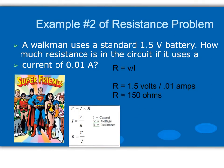In this example, a Walkman uses a standard 1.5 volt battery. How much resistance is in the circuit if it uses a current of 0.01 amps? Because we're asked to solve for resistance, we will use Ohm's law in this form. Resistance equals our voltage of 1.5 volts divided by our current of 0.01 amps, giving us a resistance of 150 ohms.